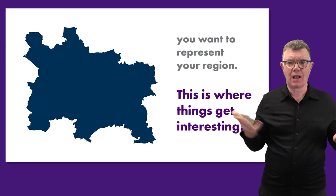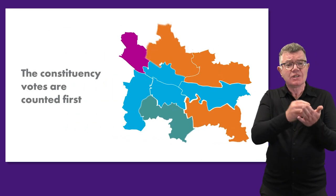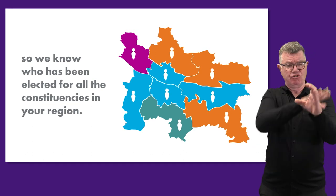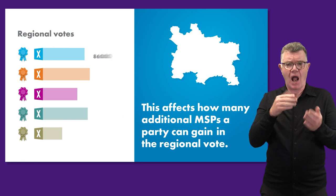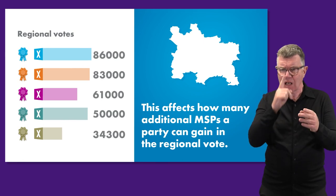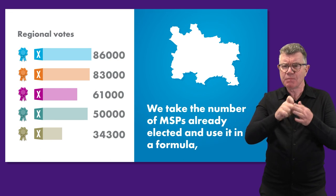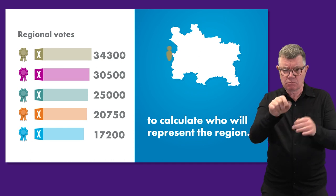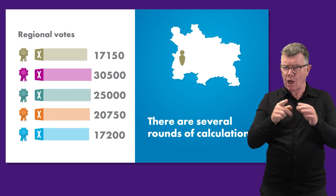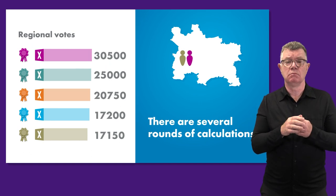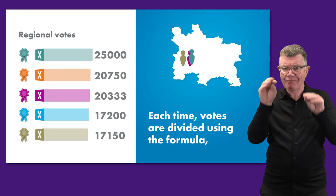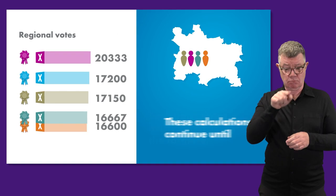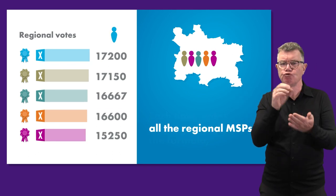This is where things get interesting. The constituency votes are counted first, so we know who has been elected for all the constituencies in your region. This affects how many additional MSPs a party can gain in the regional vote. We take the number of MSPs already elected and use it in a formula to calculate who will represent the region. There are several rounds of calculations. Each time, votes are divided using the formula, resulting in a new winner to represent the region. These calculations continue until all the regional MSPs have been elected.